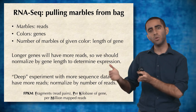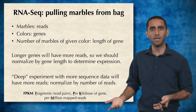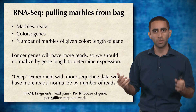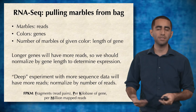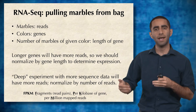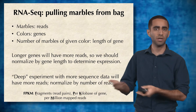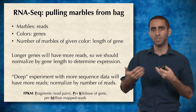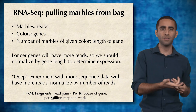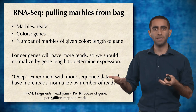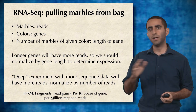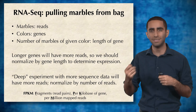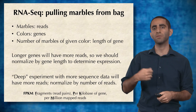Also, in two different sequencing experiments, we might have different amounts of money and sequence to different depths — generating more or fewer reads. If one experiment has more reads sequenced than another, you'll obviously get more reads from every single gene just because you sequenced more deeply, even though biologically the two cells might be exactly the same. So to compare across experiments or samples, we also need to normalize by sequencing depth — that is, the total number of reads sequenced.